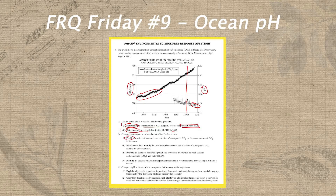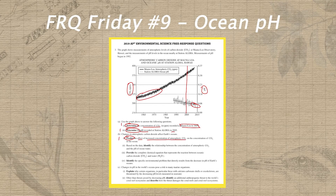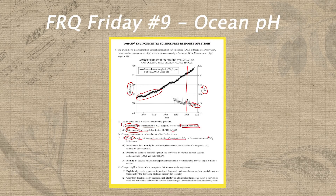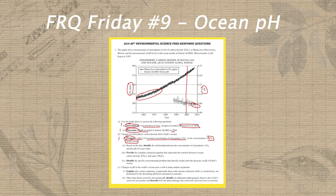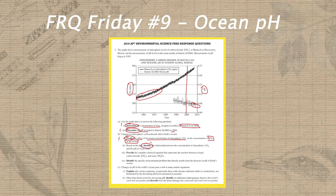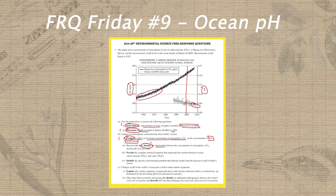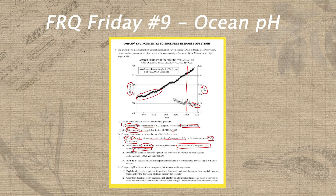In part B, part one, we have another outdated task verb — predict — but predict is a pretty straightforward statement about how these two variables interact, so we should be able to get this in one sentence. What we're predicting is the effect of increased concentration of CO2 in the atmosphere on the concentration of CO2 in the ocean. In part two, we finally have a familiar task verb — identify — so we'll circle that and write a one above it. What we're identifying is the relationship between the concentration of atmospheric CO2 and the pH of the ocean water.